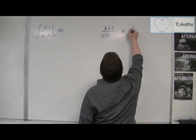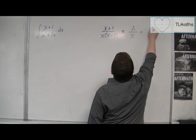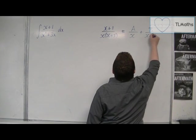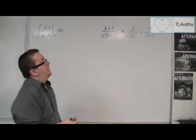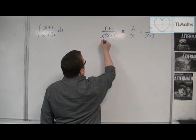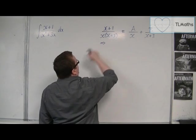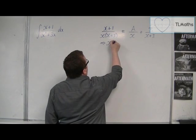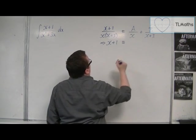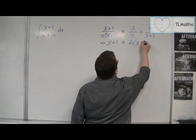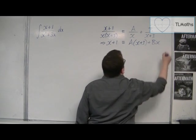And that will allow me to write this as a over x plus b over x plus 3. OK, so I can then multiply both sides by the x times x plus 3. And so x plus 1 is equivalent to a lots of x plus 3 plus b lots of x.